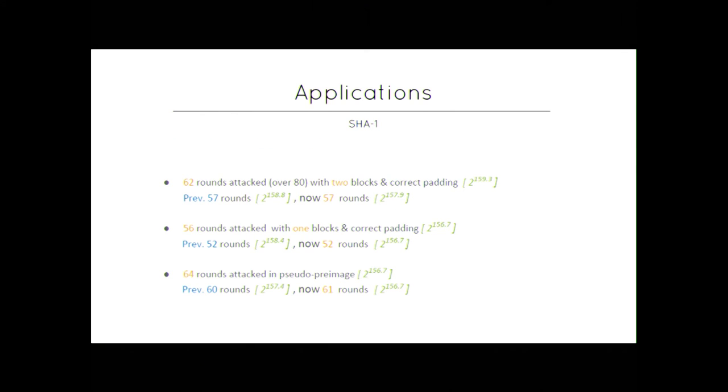It's a block cipher in Davies-Meyer mode and the structure is a Feistel with linear message expansion. Here is the round function. So the result, we get 62 rounds attacked over 80 with two blocks and a correct padding with complexity which is not trivial but close to the brute force.